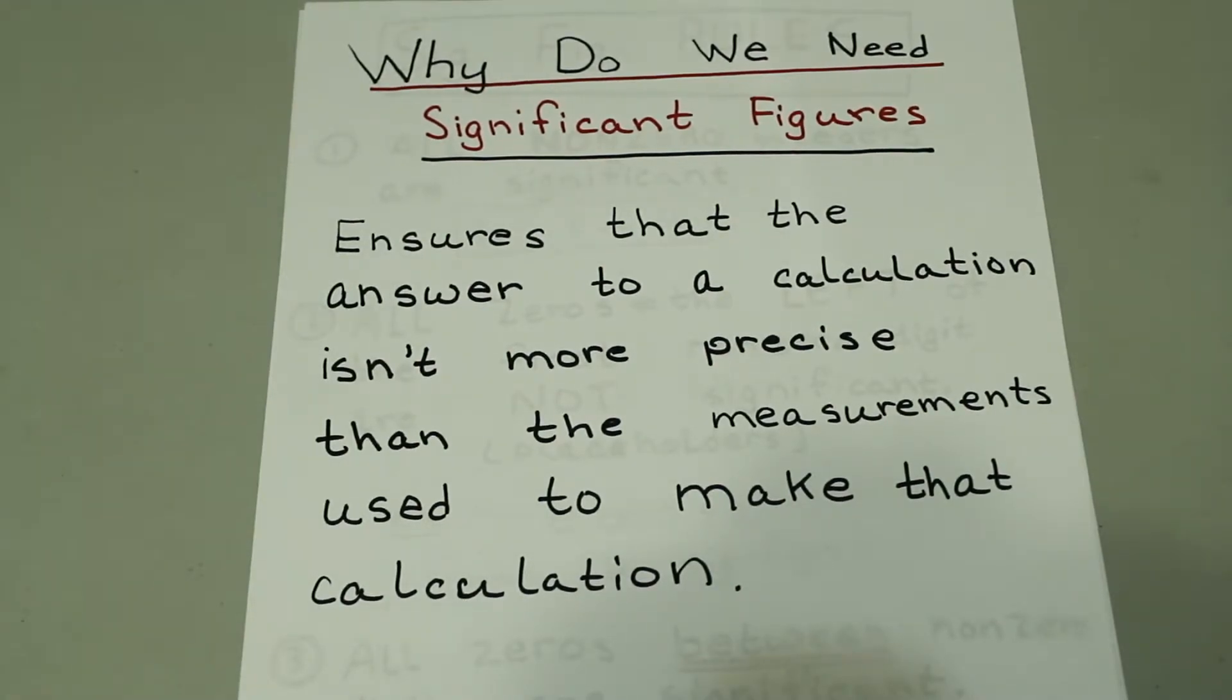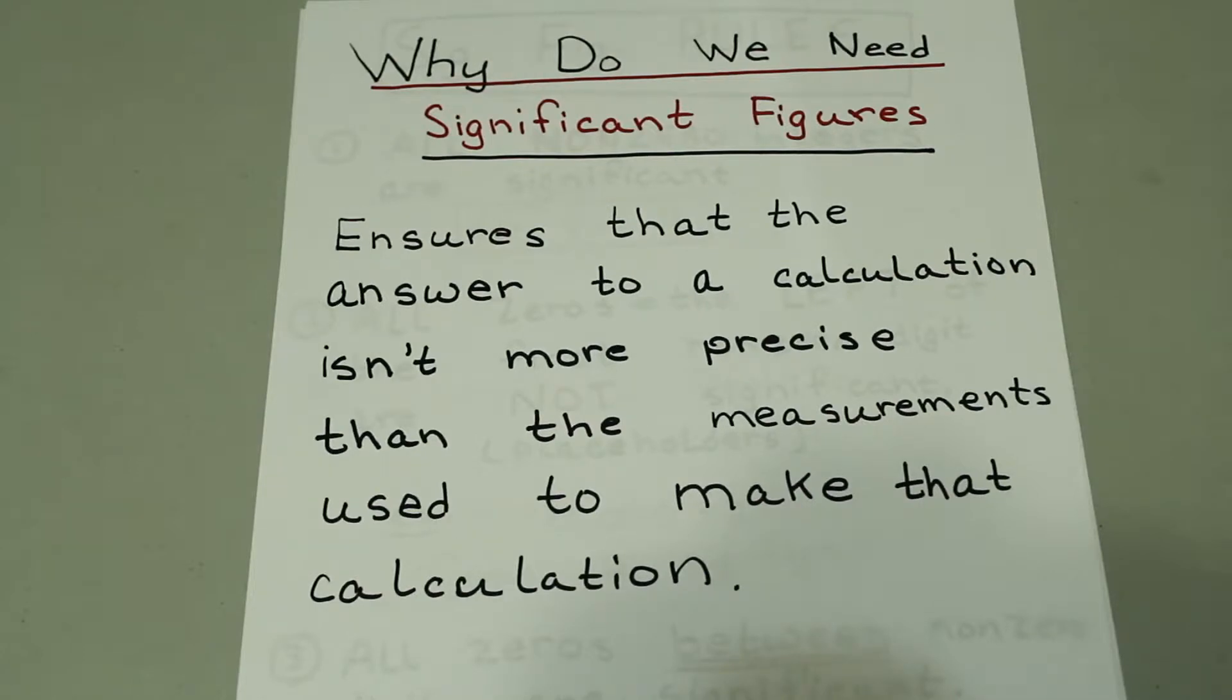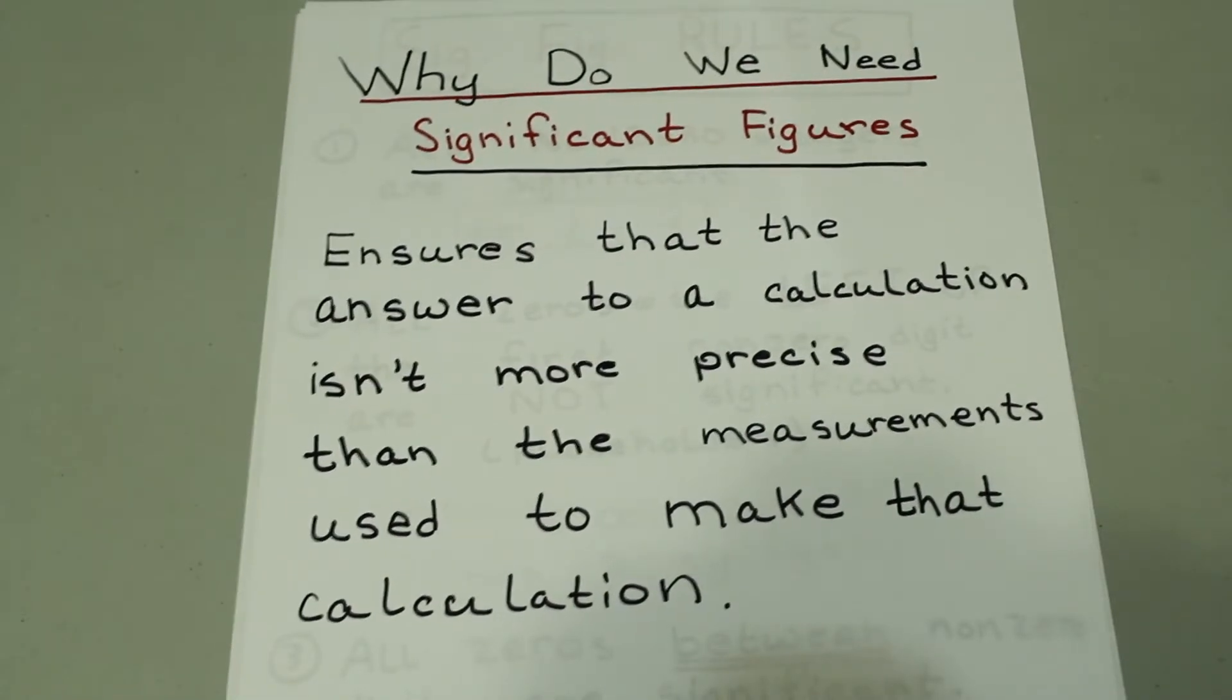Now, let's actually get to talking about significant figures. Why do we need significant figures? Well, if you think about physics or chemistry, they're dealing with real world applications. And numbers in real world applications are generally obtained through measurements. And when we do calculations, we want to make sure that those calculations aren't more precise than the measurements we start with to make those calculations. So the whole point of significant figures is to ensure that answers to a calculation isn't more precise than the measurements used to make that calculation.